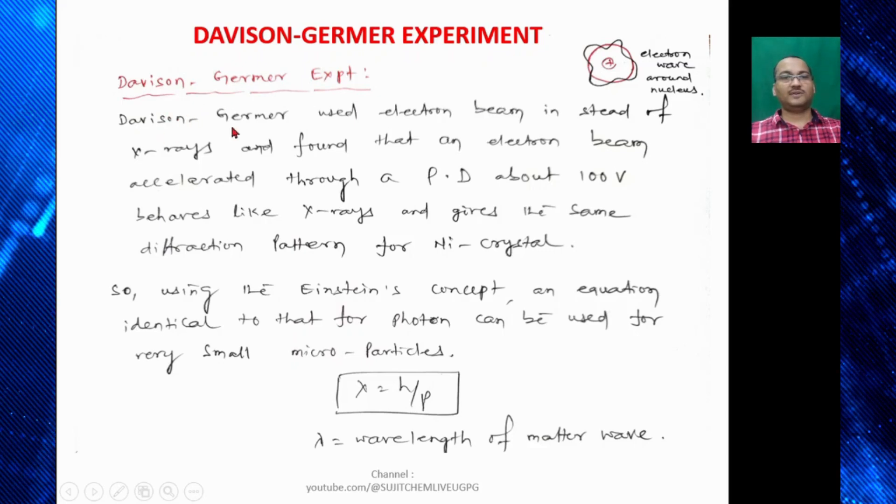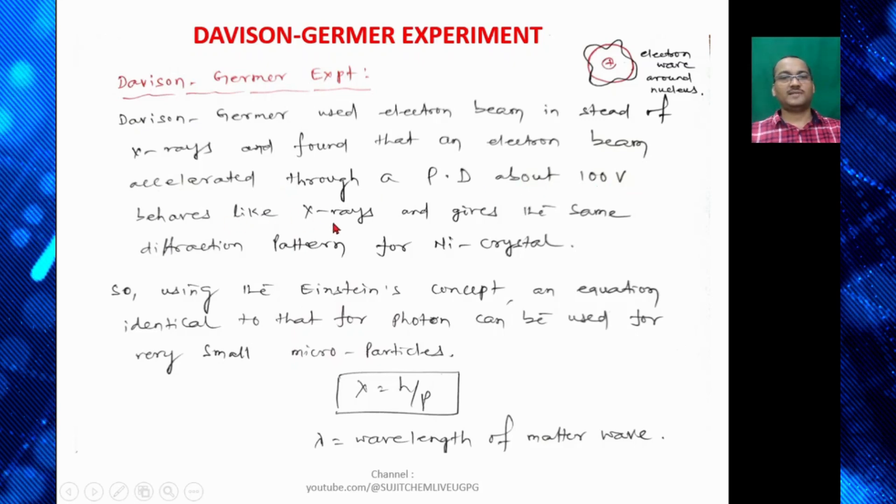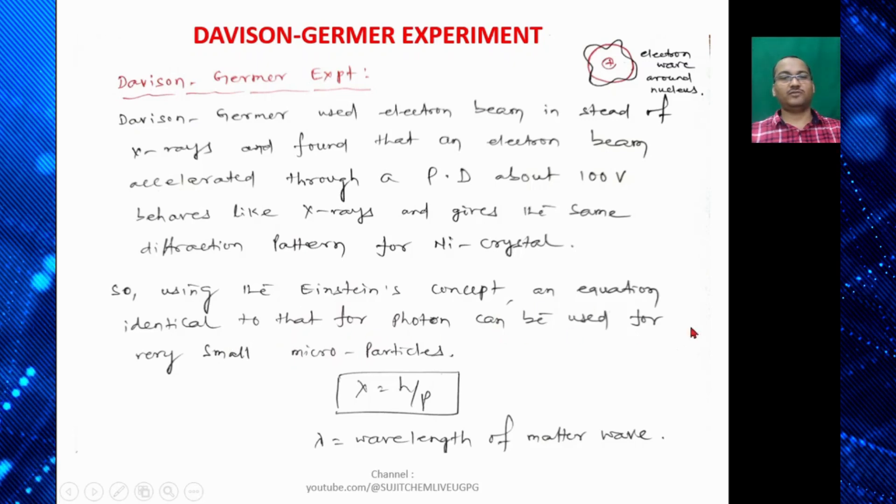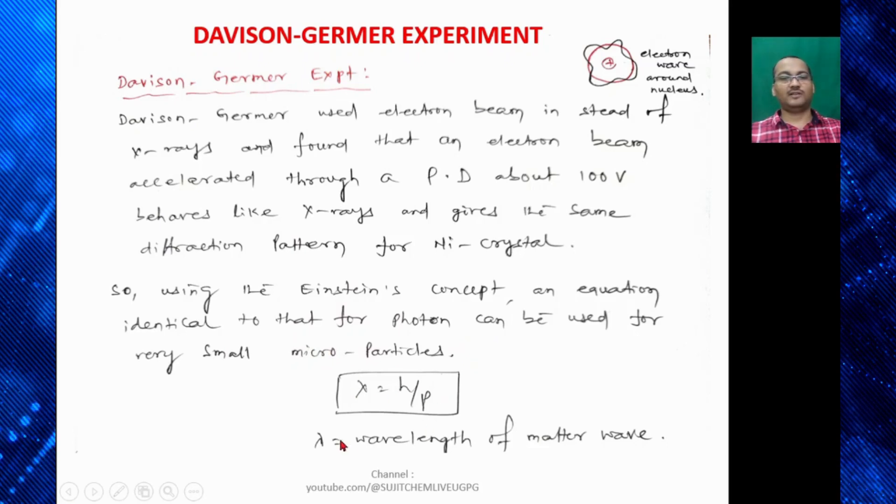So what he did? Davison-Jarmer used electron beam instead of X-rays and found that an electron beam accelerated through a potential difference about 100V behaves like X-rays and gives the same diffraction pattern for nickel crystal. So using this Einstein's concept, an equation identical to that for photon can be used for very small microparticles. So that is λ = h/P. That is λ equal to wavelength of a matter wave.